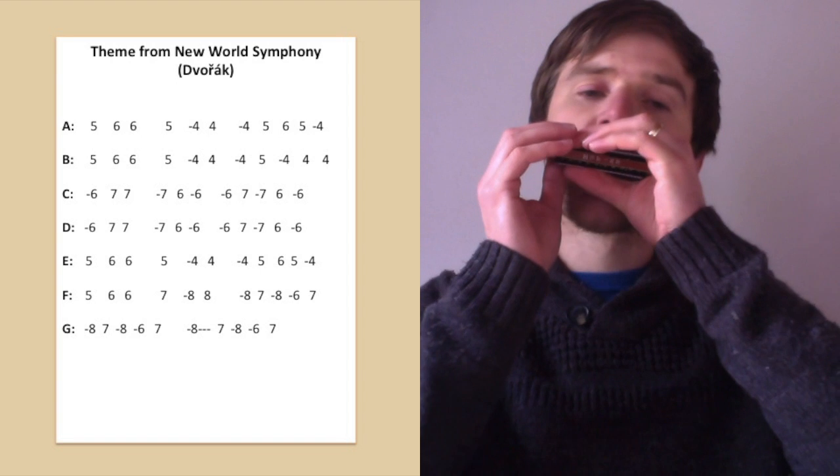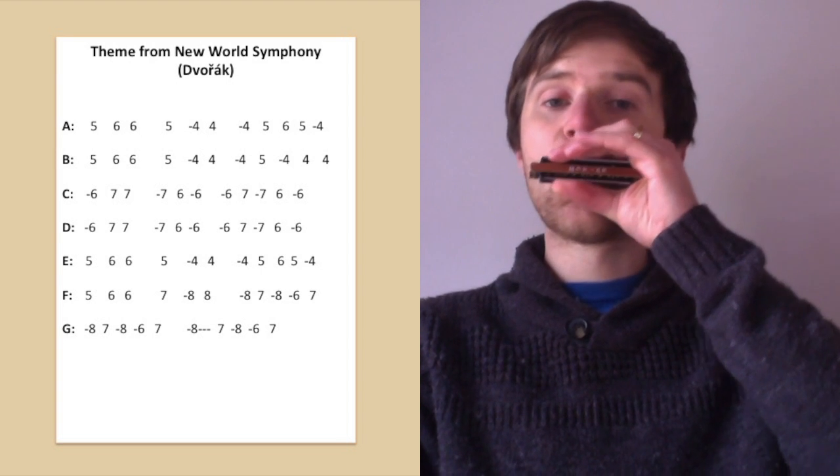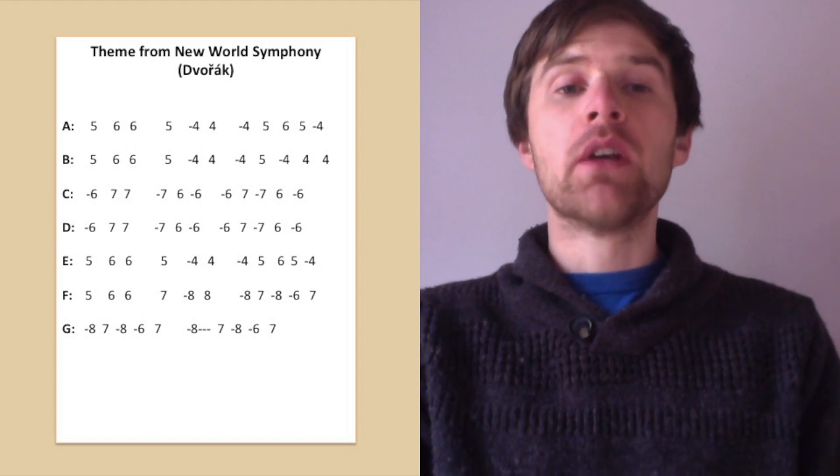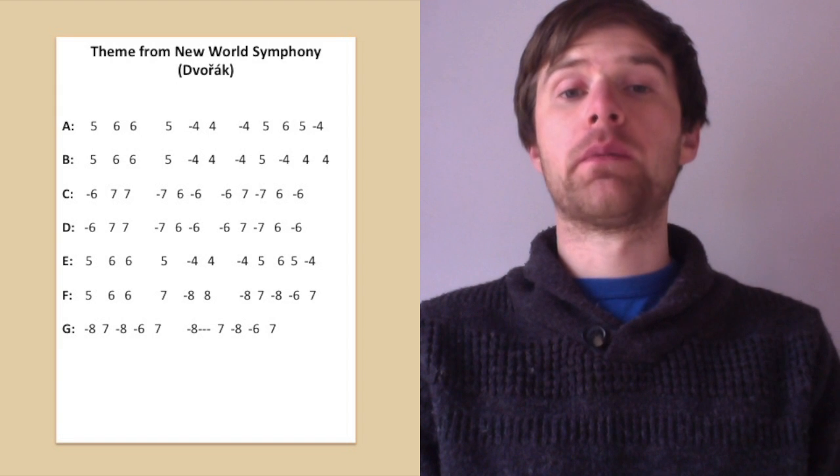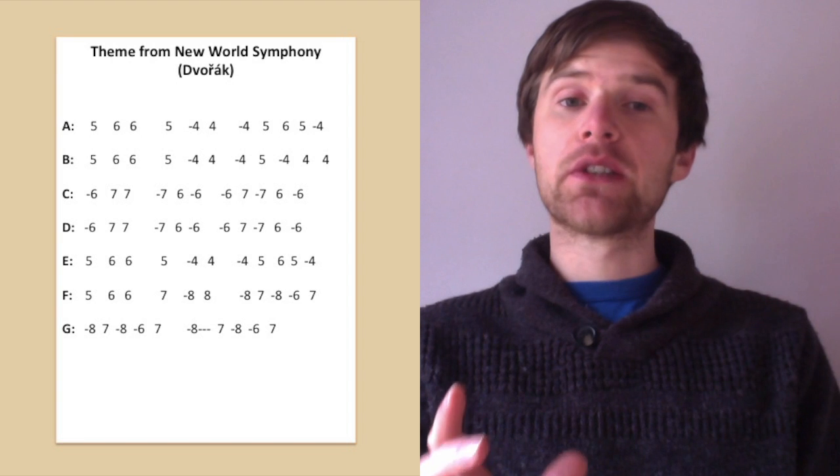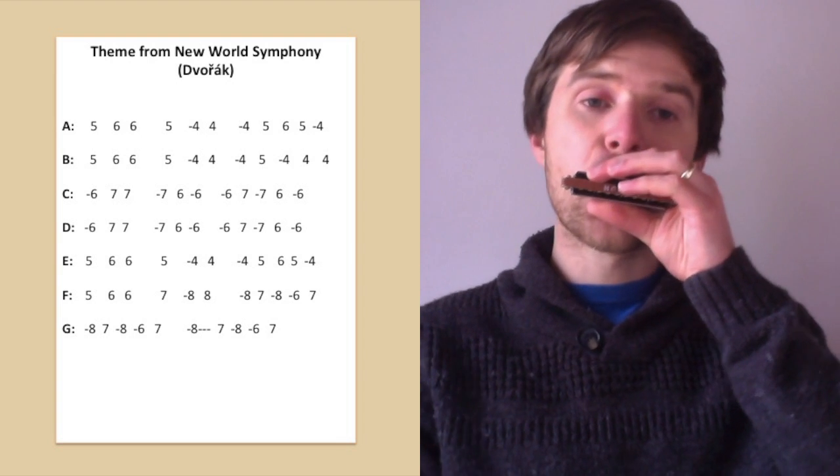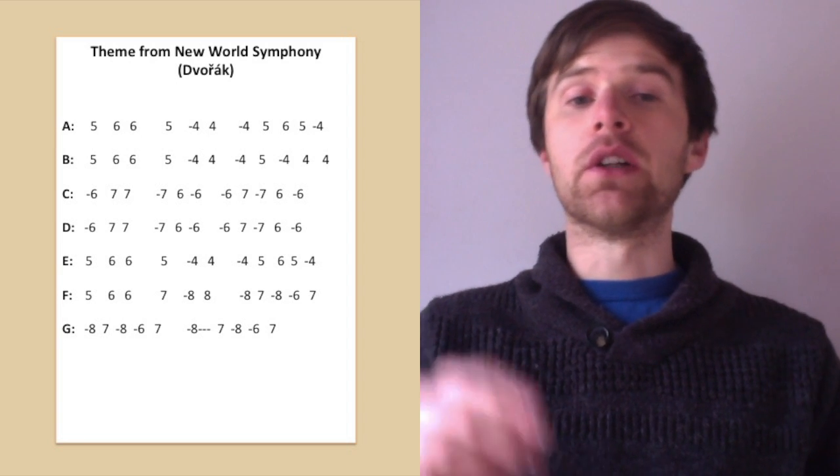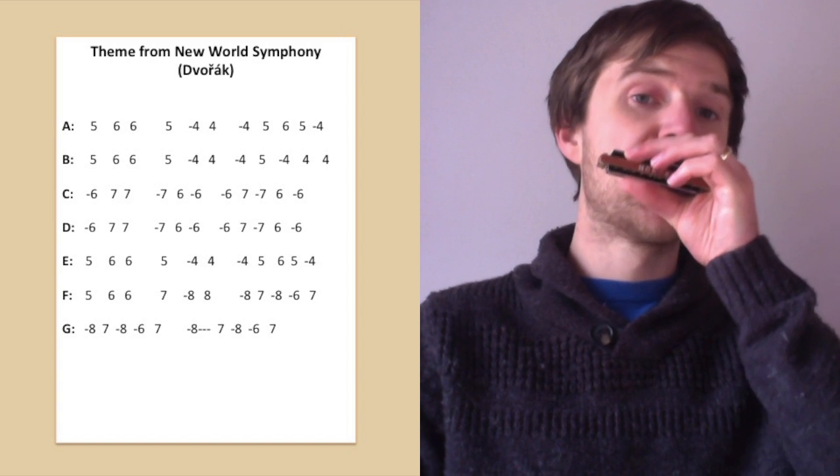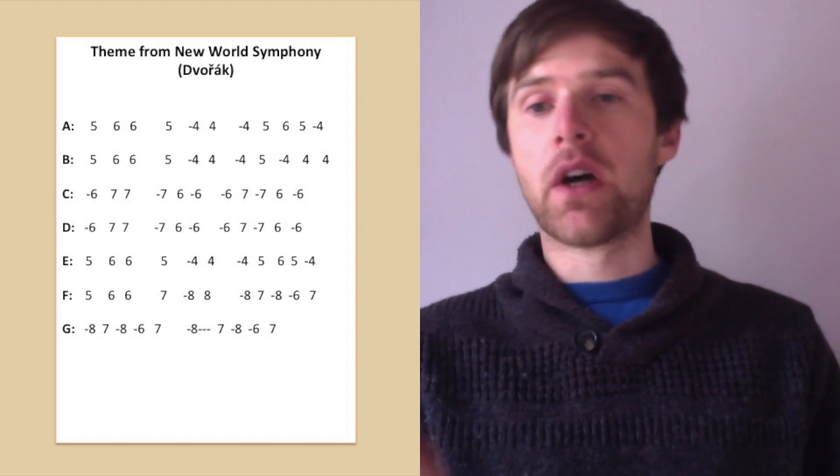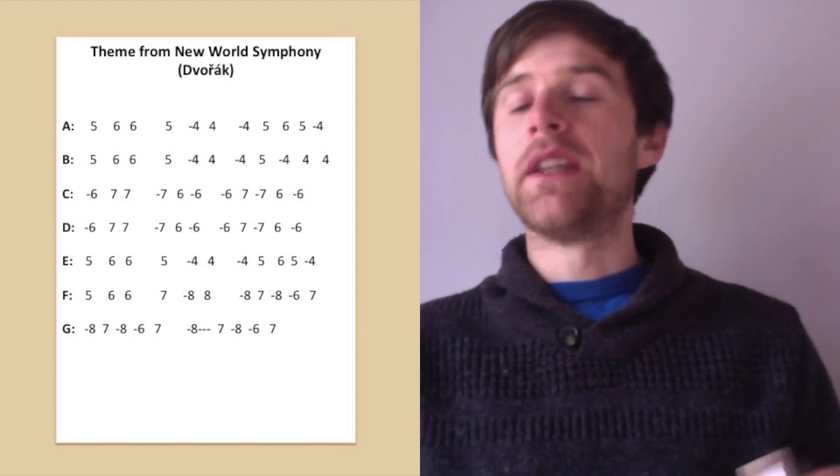Line A sounds something like this. [plays] So we've got five blow and then six blow twice. Then we've got five draw, four draw, four blow, four draw, five blow, six blow, five blow, four draw. I've kind of split into three parts. So the first three notes would be the first part of the line. [plays] So that five blow is held slightly longer. And then similar rhythm for the next part. [plays] Five, four draw, four blow. So the five blow is held longer.